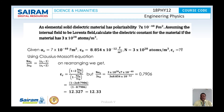Another problem: an elemental solid dielectric material has polarizability of 7×10⁻⁴⁰ farad·meter square. Assuming the internal field to be the Lorentz field, calculate the dielectric constant for the material if the material has 3×10²⁸ atoms per meter cube. ε₀ = 8.854×10⁻¹² farad per meter square and n = 3×10²⁸ atoms per meter cube.